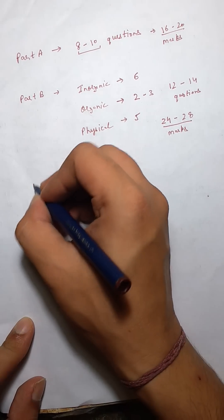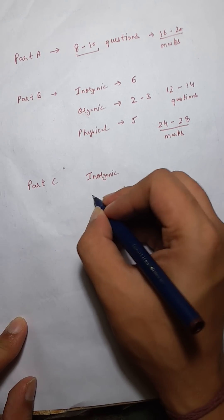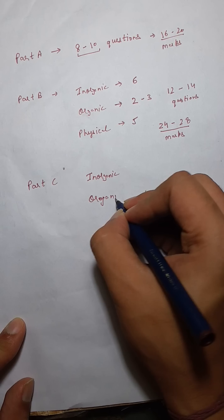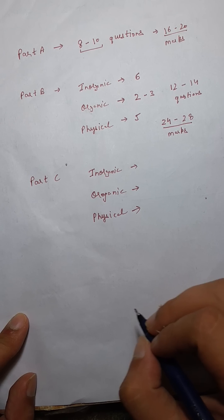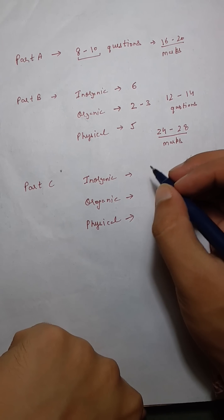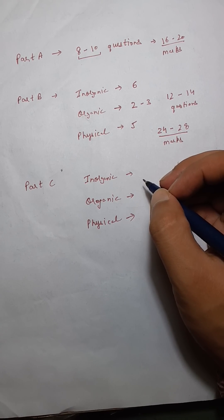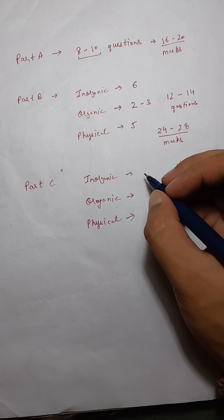Moving on to part C. Again we'll divide it into inorganic, organic and physical. Let's do the analysis of part C. So in inorganic out of the two questions that came for ESR we can say one of them was easy. Then there were two questions on bio inorganic and out of them again one was quite simple. Then we had a question on color in coordination compound that was also quite simple. So we have three questions over here. Then we had one question from acidity basicity. So that was also very very simple. So four questions in inorganic part.